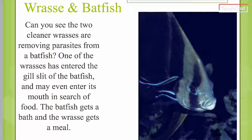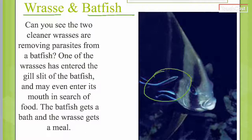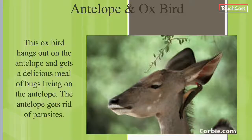The second example is the cleaner wrasse and the batfish. The two cleaner wrasse are removing parasites from the batfish. One of the wrasse has entered the gill slit of the batfish and may even enter its mouth in search of food. The batfish gets a bath and the wrasse gets a meal — one gets clean, one gets food — plus/plus for all.